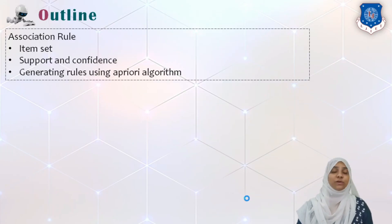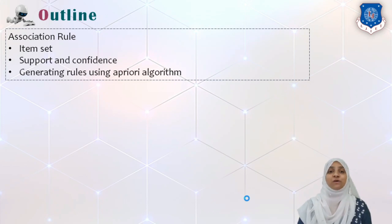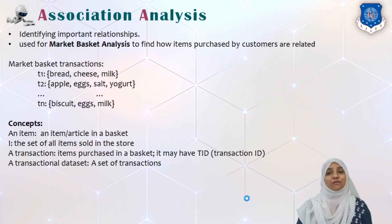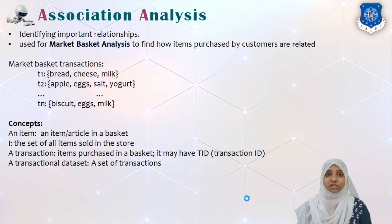Hi, in today's video we are going to study an unsupervised method which is used as association rule. We will see important definitions of item set, support and confidence calculation, and how to generate rules using the A Priori algorithm. So let us start with association analysis, which is one of the unsupervised techniques used for identifying important relationships in a given transactional set of data.